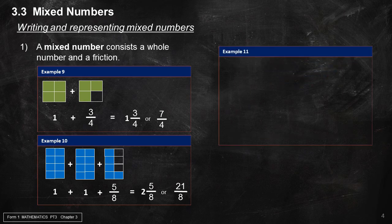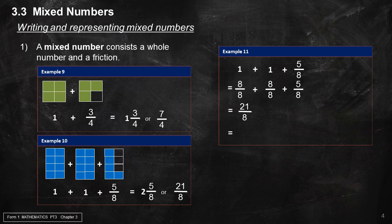Example 11: 1 plus 1 plus 5 over 8 — expand 1 into 8 over 8 for a similar denominator to enable addition. The sum result is 21 over 8, or 2 and 5 over 8.